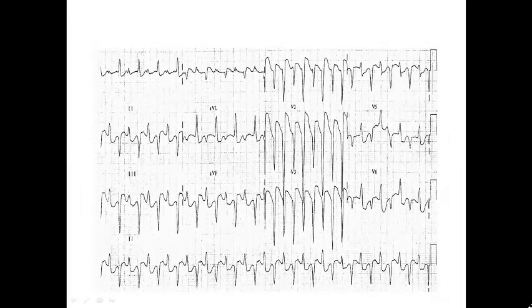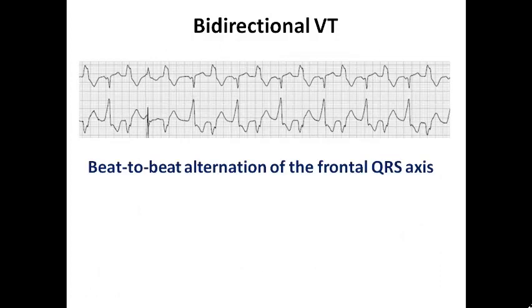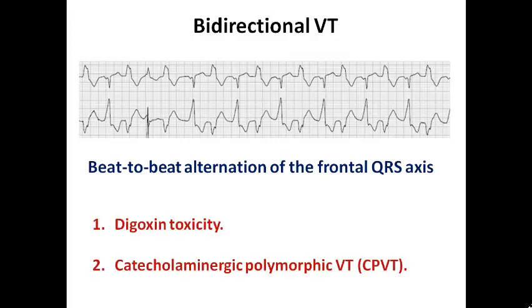Another morphological pattern is bidirectional VT — two morphologies alternating with each other on alternate beats, with beat-to-beat alternation of the frontal QRS axis. This pattern is very common with digoxin toxicity and catecholaminergic polymorphic VT. Whenever you see this pattern, suspect one of these two conditions.